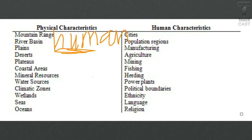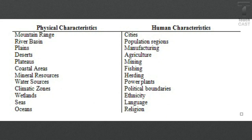Here's a really good T-chart that helps understand what physical and human characteristics are. I want you to copy this into your spiral. The physical characteristics side includes things like mountains, river basins, mineral resources, water sources, seas, oceans, etc.